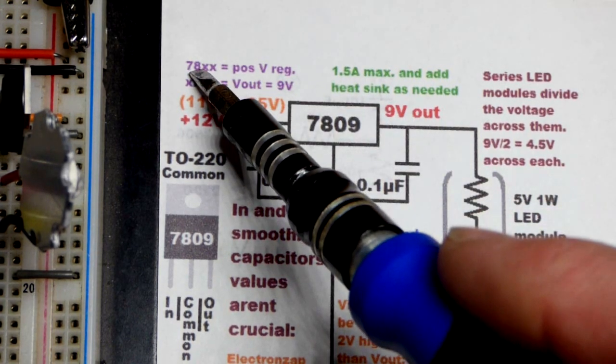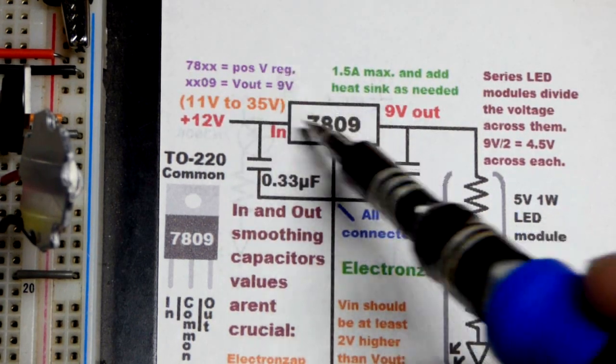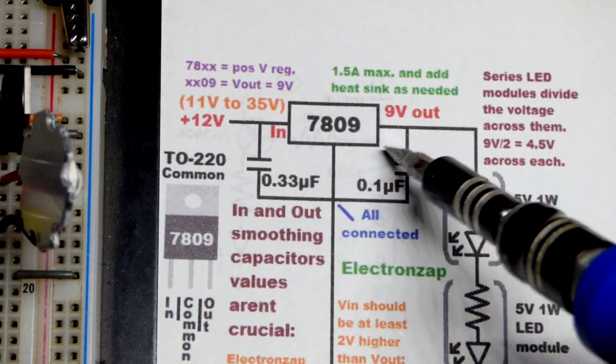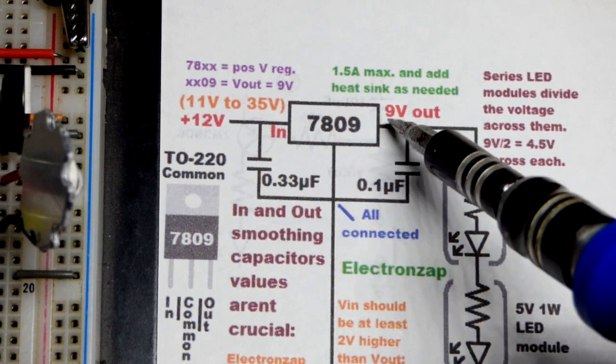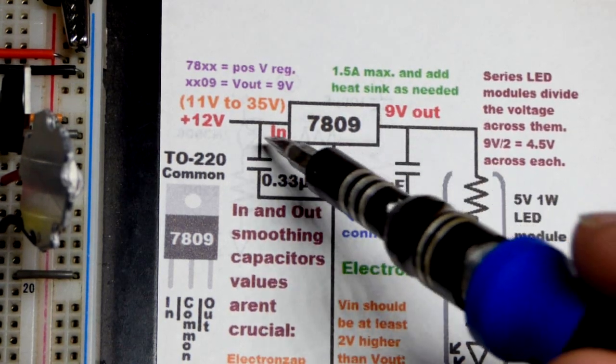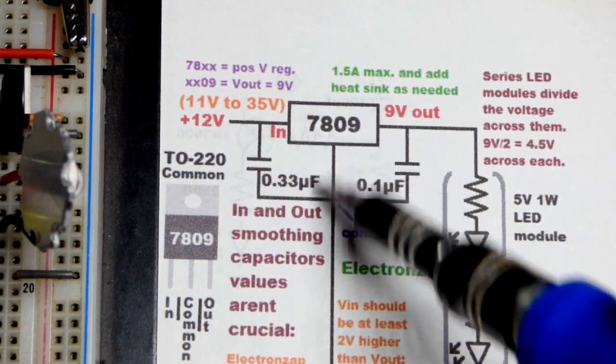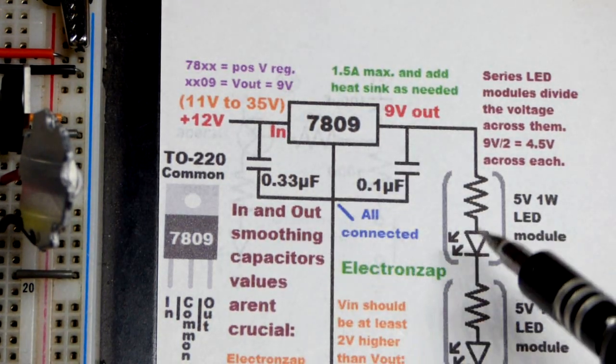The 7800 series is a positive voltage regulator. If you have a negative supply voltage that you want lower compared to zero volts ground, then you would use the 7900 series integrated circuit. Not something at all related to this circuit.